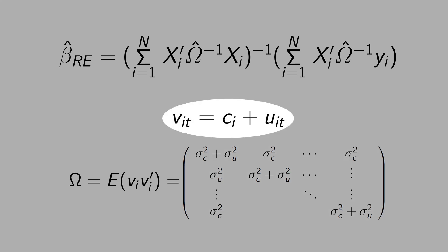Not everybody automatically sees how this error term here V, composed by C and U, generates this matrix here.